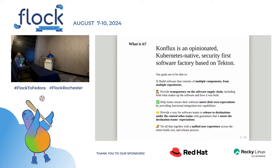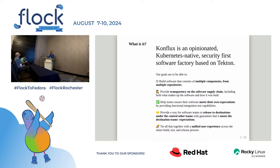We have features that help teams responsible for individual software artifacts input tests so they can make sure the software they're making meets their own expectations, but also provide ways for people not on that team to provide quality gates on the content being produced. Our typical personas are release engineering or site reliability engineering departments that want to ensure teams providing software meet criteria necessary for deploying to their environments. Tying all that together with a unified user experience across the entire build, test, and release process.